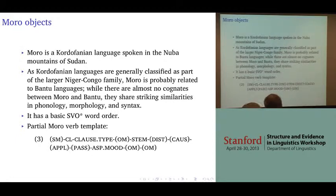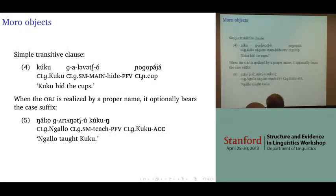Moro shows similarities to Bantu in terms of morphology and phonology, but has practically no cognates with Bantu — it's one of these classification conundrums. What's important to us is that it has a basic subject-verb-object word order, which we'll see in a minute.